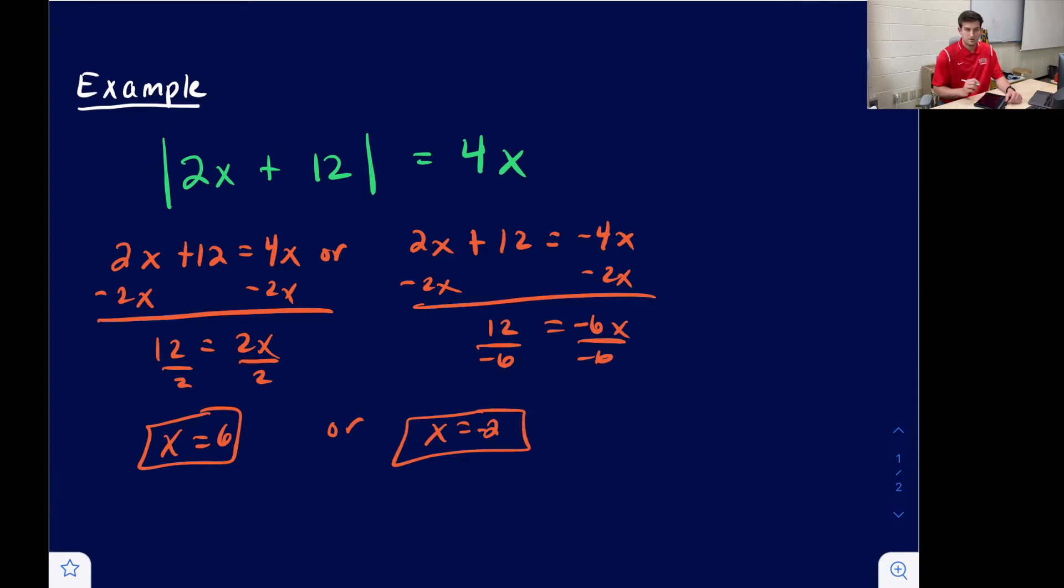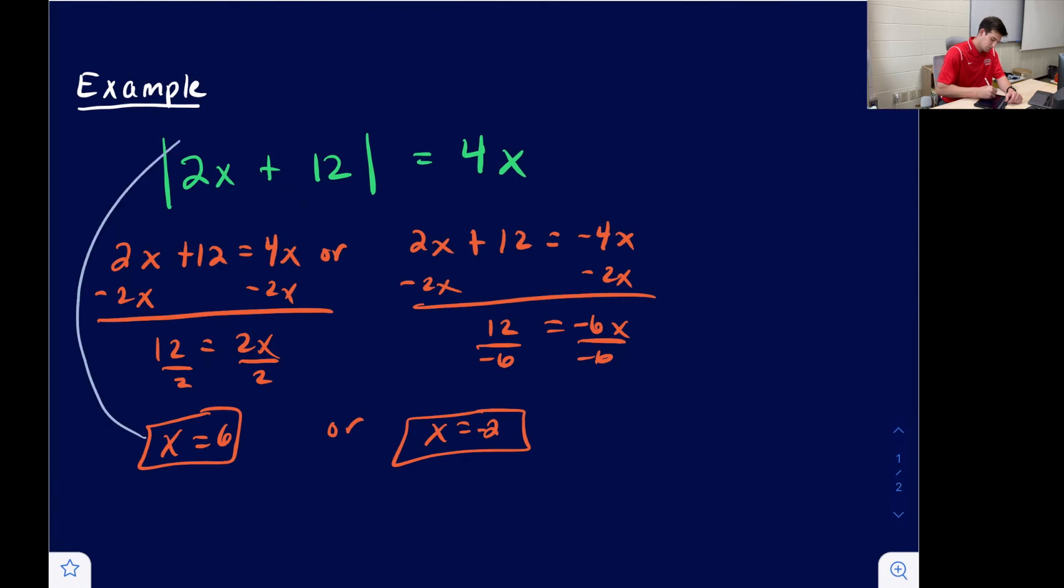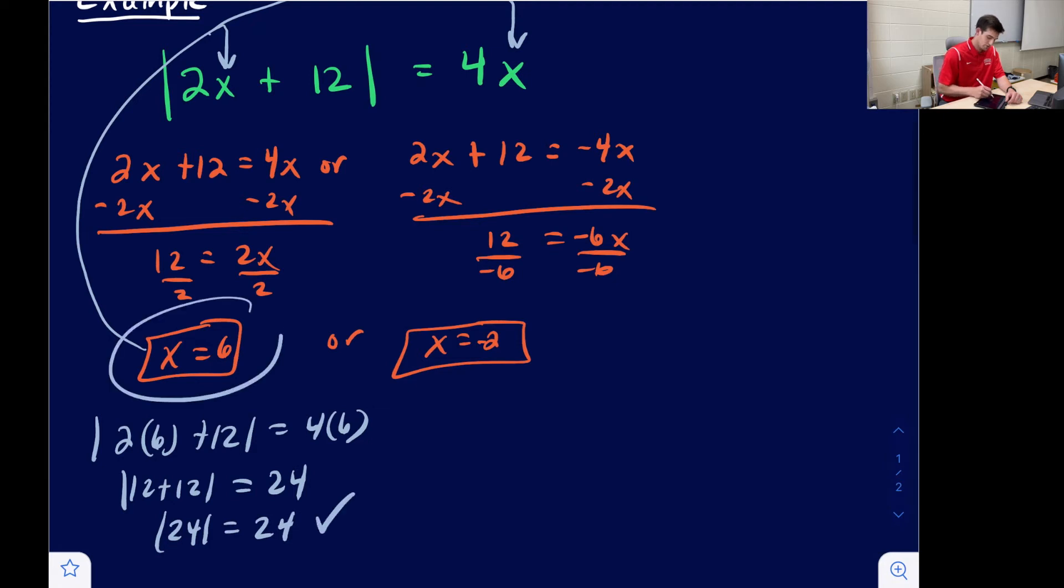So those are our two solutions. Now we want to check them. So for this first solution, let's take and plug 6 in for that x and for this x. So it'll look like this. We'll say the absolute value of 2 times 6 plus 12 is equal to 4 times 6. Well, here we get 12 plus 12. 4 times 6 is 24. And we get the absolute value of 24 equals 24, and that is good. So we will accept 6 as one of our solutions.